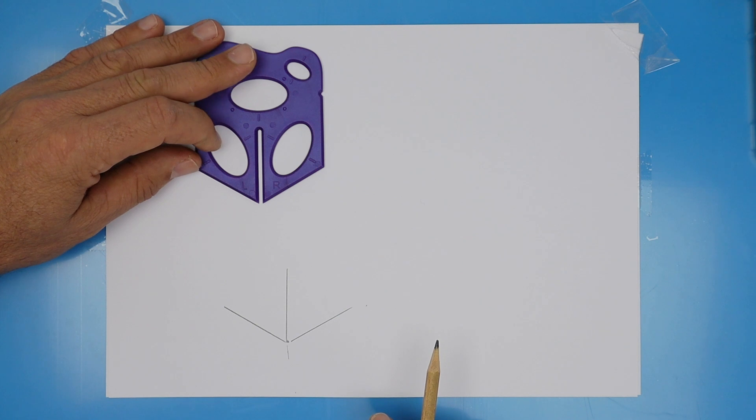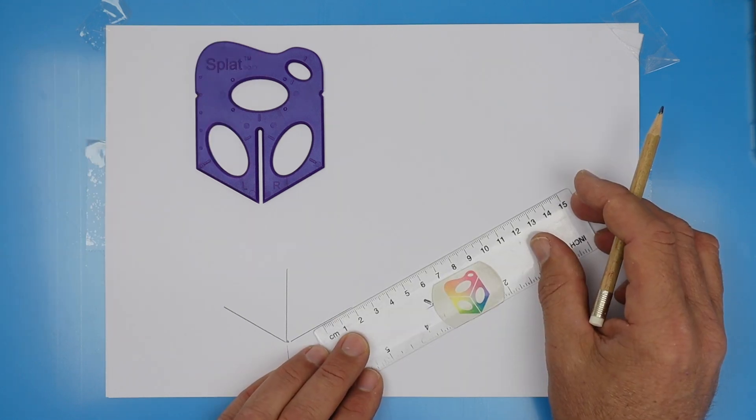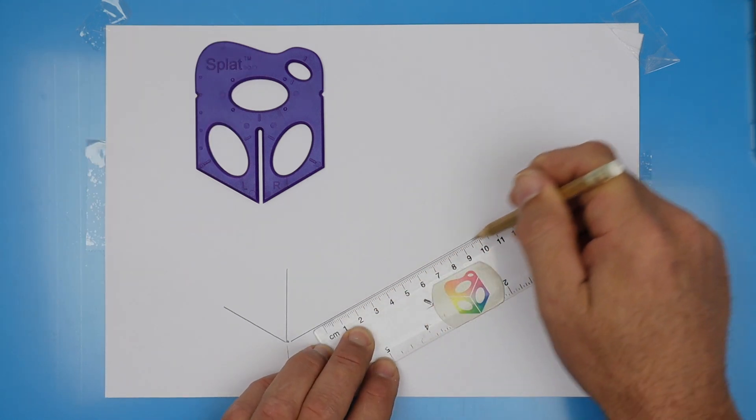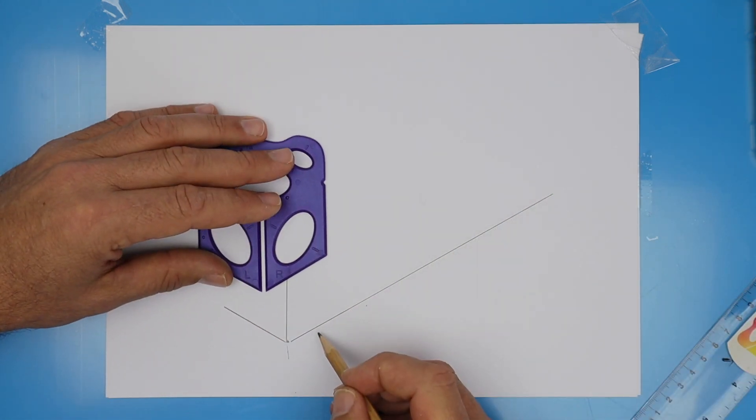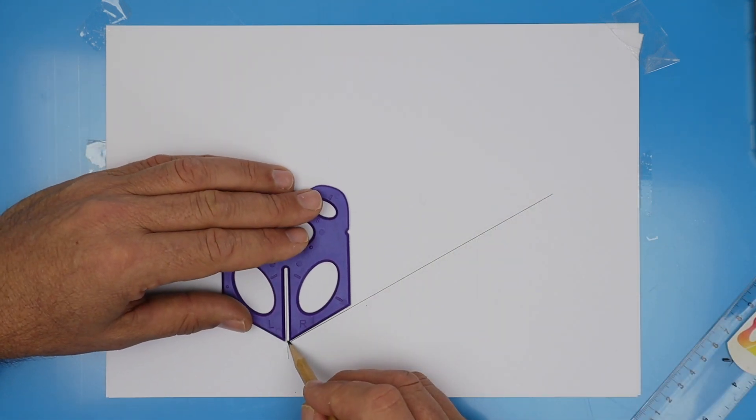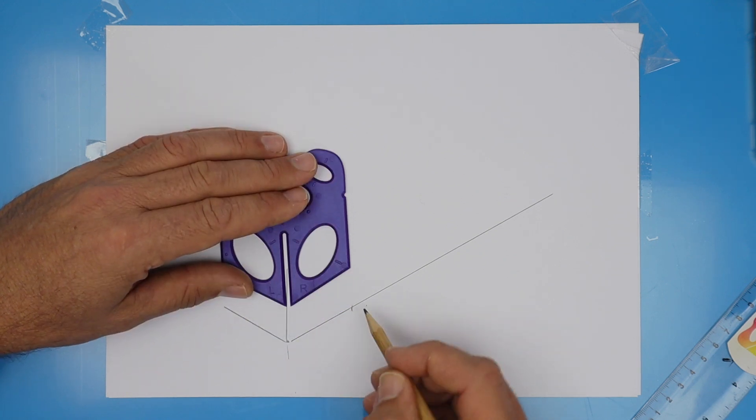I'm using a ruler, and I'm extending one of those lines out. Make your lines nice and light. I'm drawing them a little darker so that you can see. All right, so that's a nice long line.